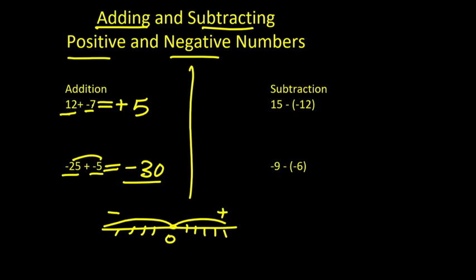This is how we can add positive and negative numbers. Now we move to the second part, which is subtracting positive and negative numbers. Here, in this example, we have positive 15 and negative 12, and we are going to subtract them. Before subtracting these, I want to explain the rules of multiplying positive and negative numbers, because the parenthesis means this sign is multiplied with the sign inside the parenthesis.